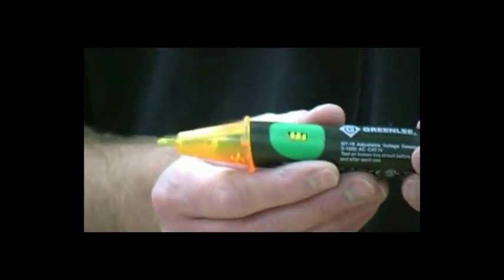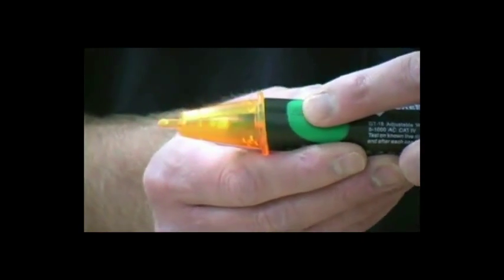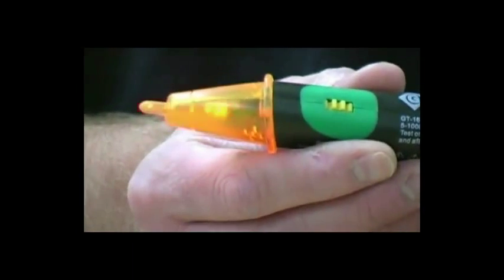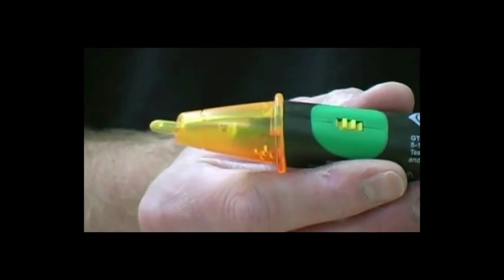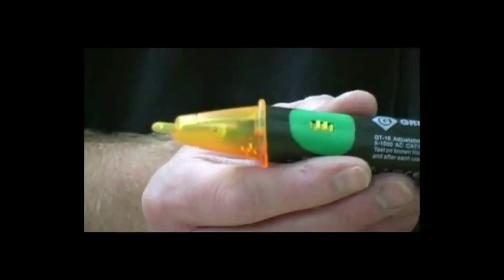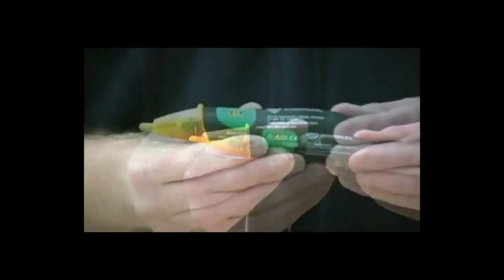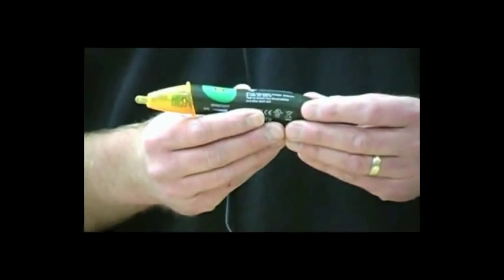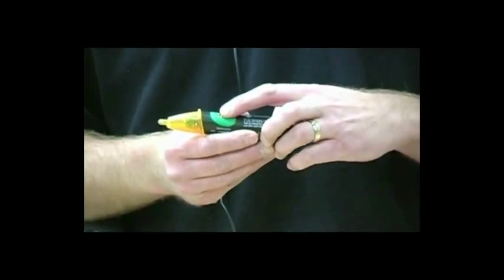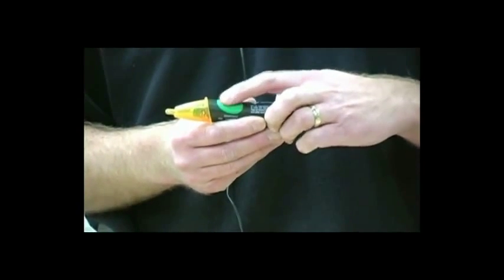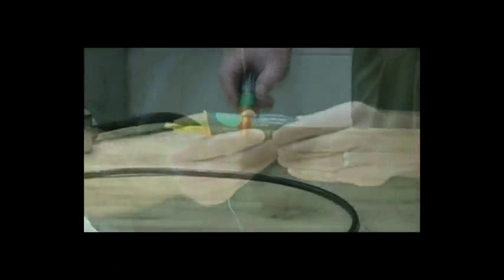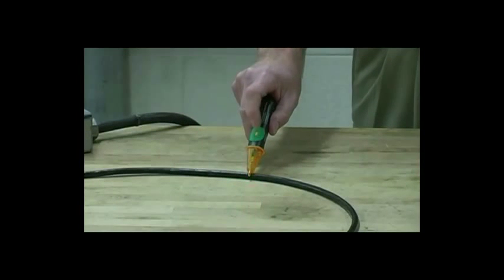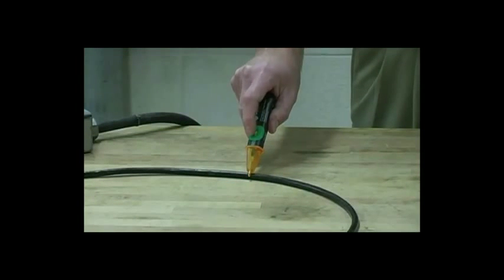To turn on the GT16, rotate the thumb wheel toward the tip. Verify the LED is blinking about every 2 seconds or so. This is a self-battery check feature. The GT16 combines the capabilities of the GT11 and the GT15 with an adjustable sensitivity dial. By rotating the adjustable sensitivity wheel towards the tip, we decrease the sensitivity. By rotating it back towards the cap, we increase the sensitivity.